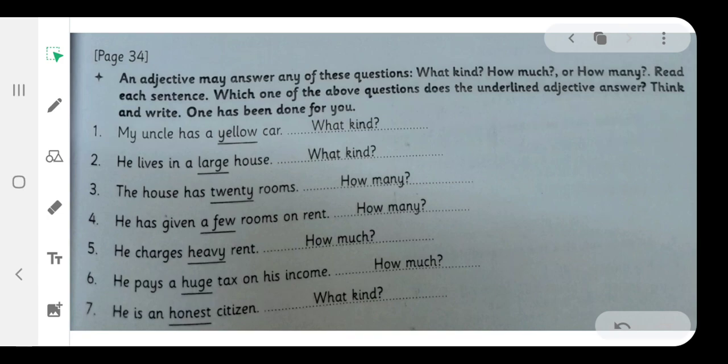Number five. He charges heavy rent. Heavy. Answer: How much? Number six. He pays a huge tax on his income. Huge. Answer: How much?